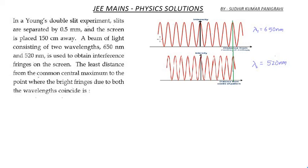So here we can see fringe patterns caused due to 650 nanometer and here we can see fringe patterns caused due to 520 nanometer. We can observe that these fringes are slightly wider whereas these fringes are slightly compressed.